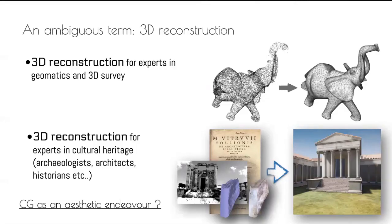The term '3D reconstruction' itself is not very clear. In the domain of geomatics and 3D survey, 3D reconstruction is the process to pass from a point cloud to a mesh. But in digital humanities, 3D reconstruction is the combining of different sources to create a representation of how a context likely was in the past. It is considered by some as an aesthetic endeavor due to the lack of scientific language behind the reconstruction. A lot of reconstructions are well done but undocumented.